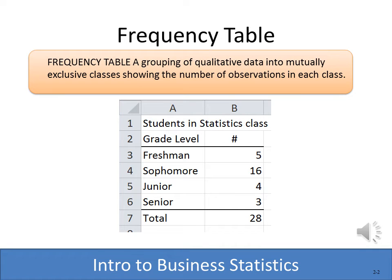The first thing you need to learn about is a frequency table. A frequency table is just a list of the different categories that you're tracking and the number of occurrences. So with this example, this might be the class level of the students in this particular statistics class, and then how many there are within each category — and that's called a frequency table.